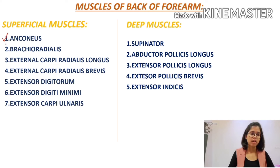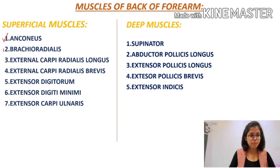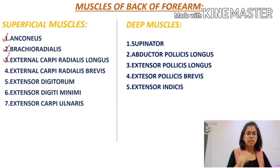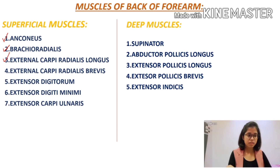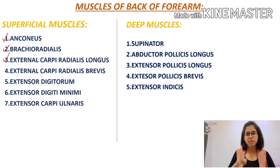After leaving the radial sulcus, the nerve passes between the two sets of muscles. The lateral muscles — brachioradialis and extensor carpi radialis longus — are innervated here. The medial one, brachialis, receives only proprioceptive fibers. Coming to the cubital fossa, the nerve gives branches supplying extensor carpi radialis brevis and supinator.